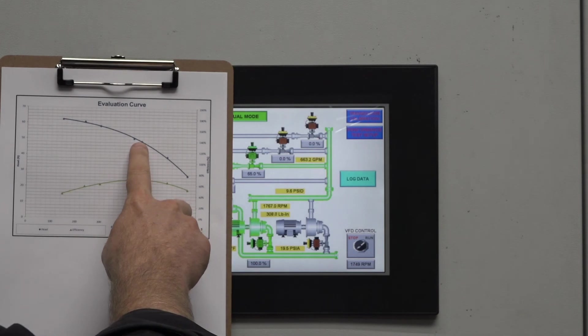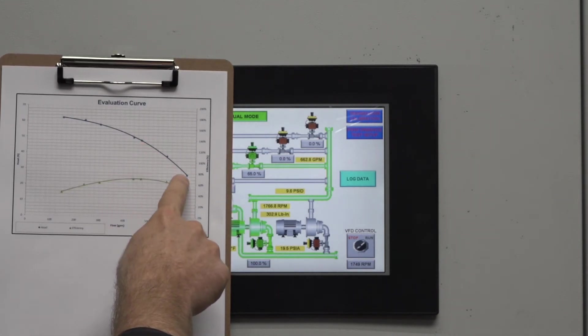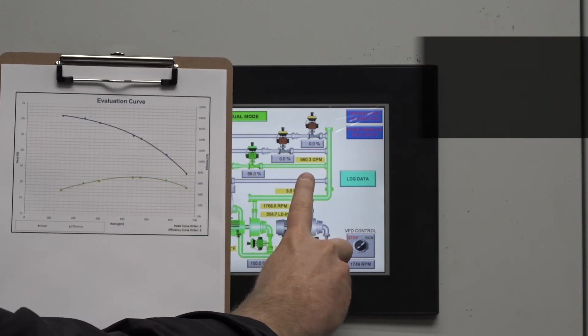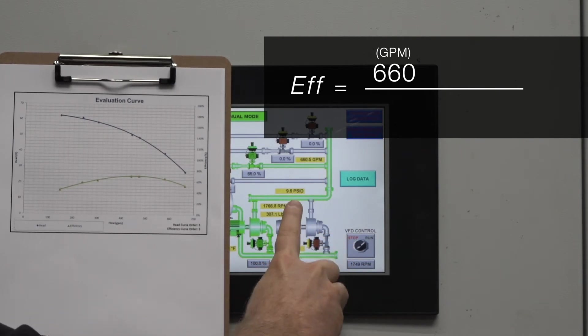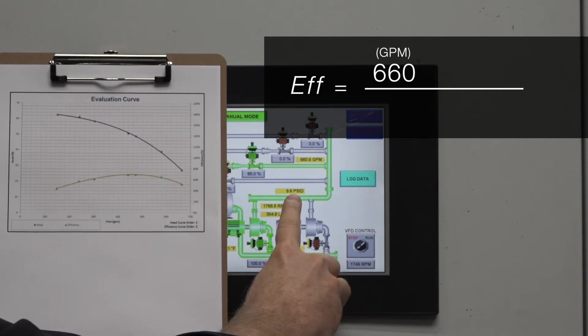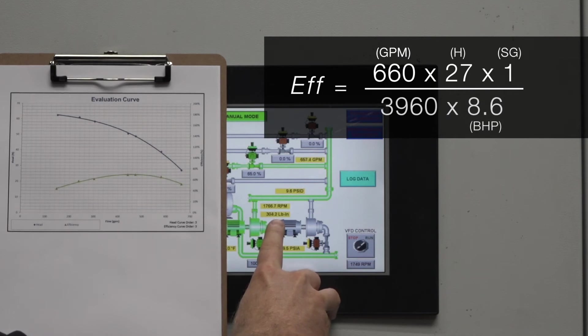So we have now increased the pump's flow rate from the best efficiency flow out to the right of the curve and you can see we're now operating at around 660 gallons per minute. At this flow our differential pressure is 9.7 psi which is equivalent to 27 feet of head and our power consumption is 8.6 horsepower.